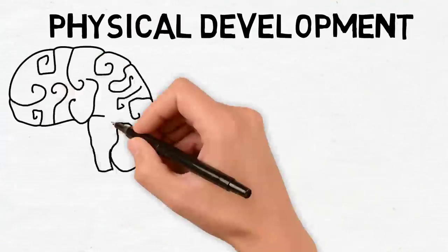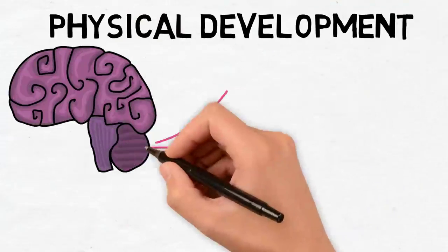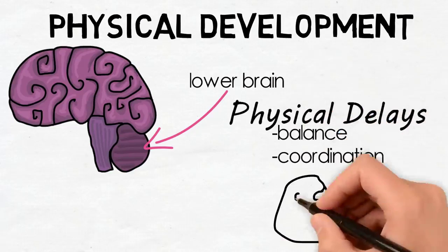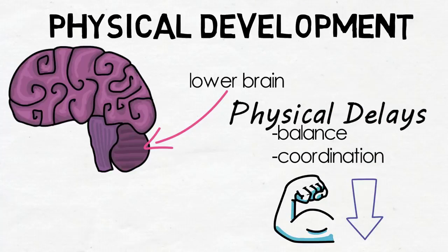ASD affects the lower brain, which is responsible for balance and coordination. Therefore, children with ASD often face physical development delays. They also have low muscle tone and affected fine and gross motor skills. As such, it makes smooth changes and transitions from one movement to another very difficult for children with ASD.